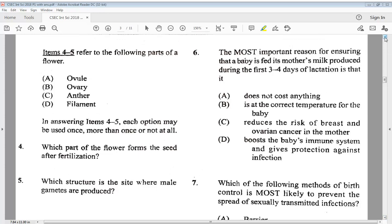6 says, the most important reason for ensuring that a baby is fed its mother's milk produced during the first 3 to 4 days of lactation is that it A, does not cost anything. B, is at the correct temperature for the baby. C, reduces the risk of breast and ovarian cancer in the mother. Or D, boost the baby's immune system and gives protection against infection. We know it is D, boost the baby's immune system and gives protection against infection.